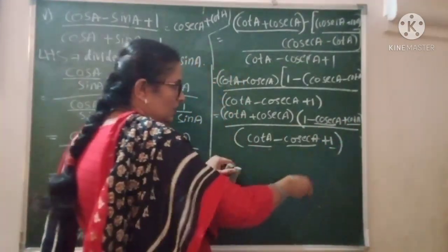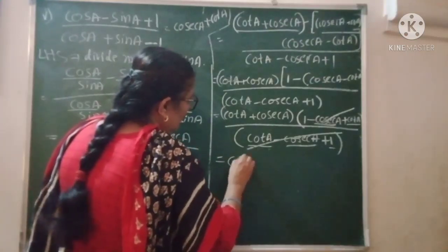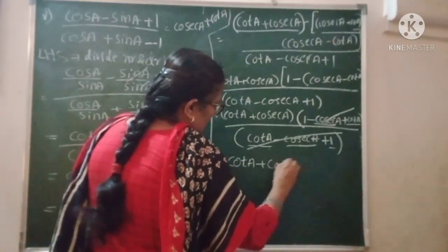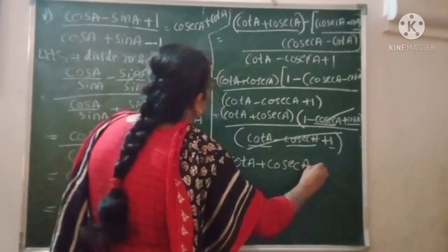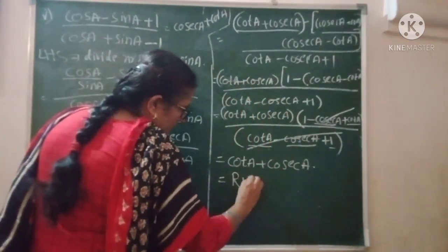Divided by cot A minus cosec A plus 1. See? Every term is the same. It will cancel. So you remain with cot A plus cosec A. This is what we want, equal to RHS. Hence proved.